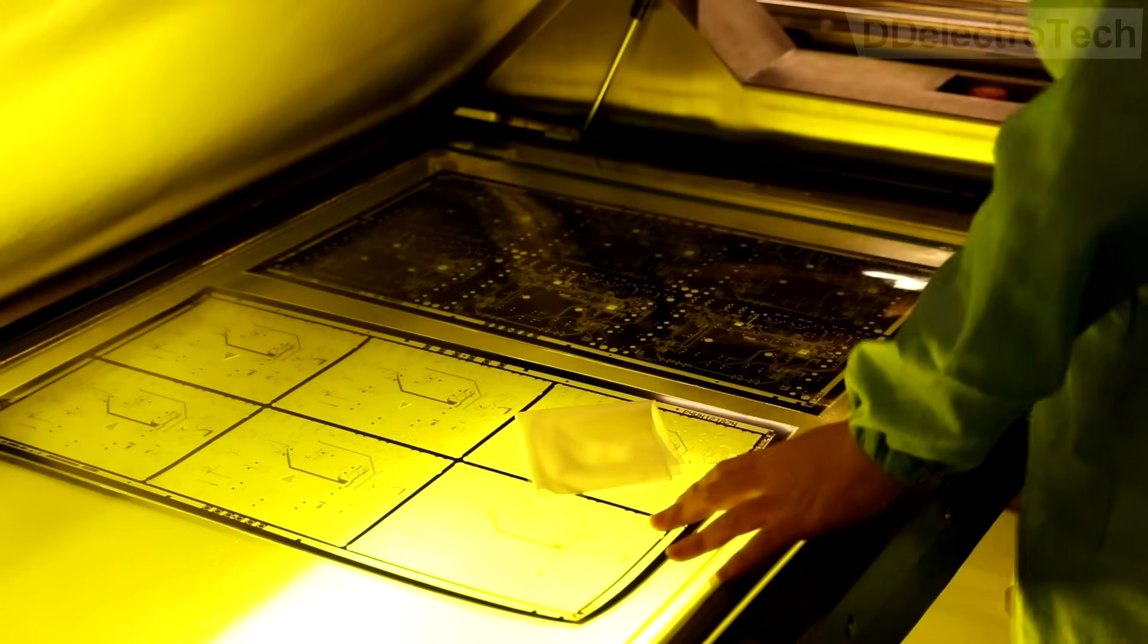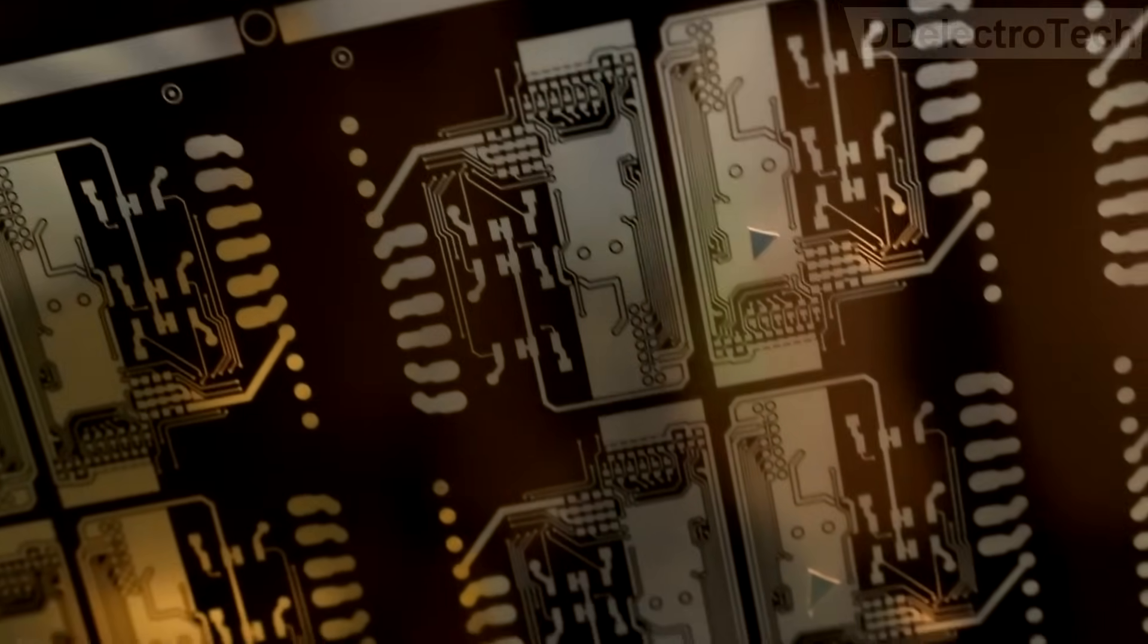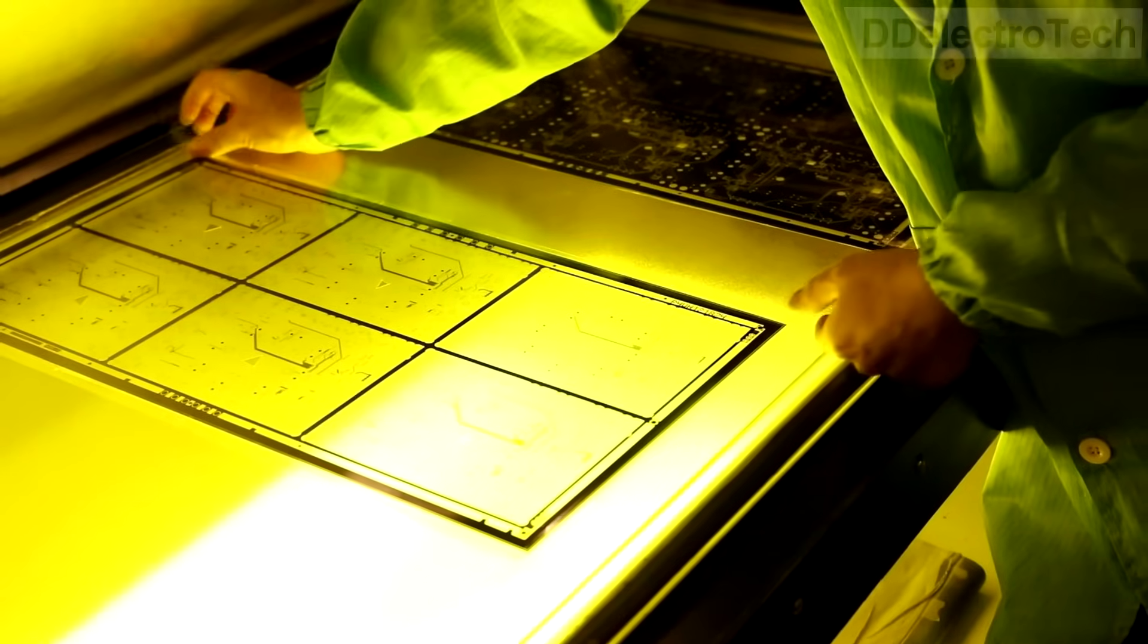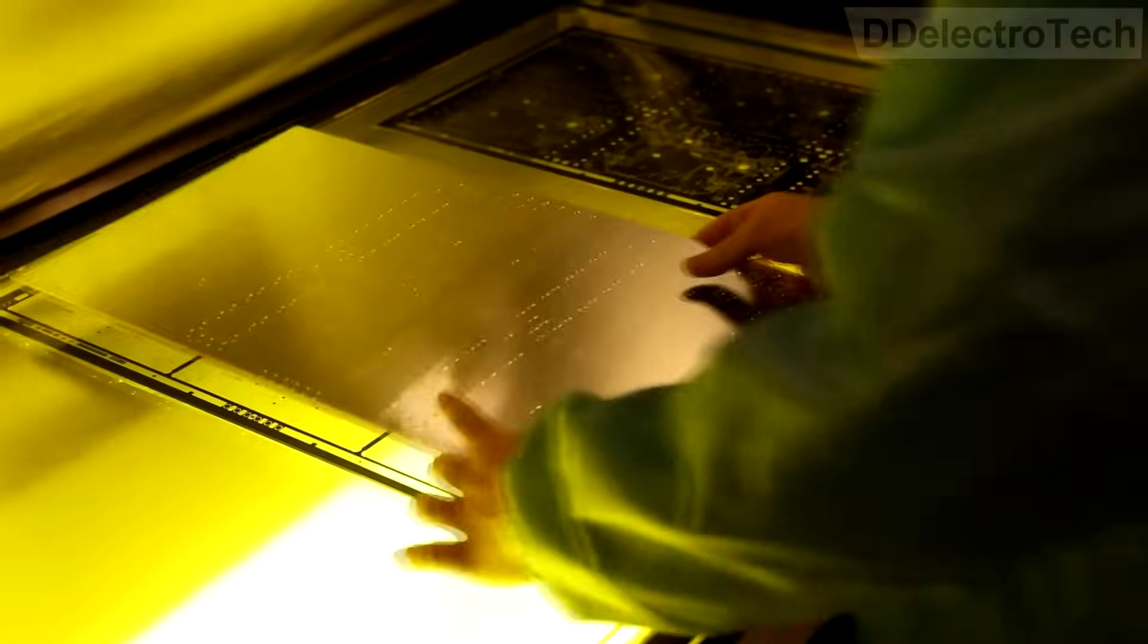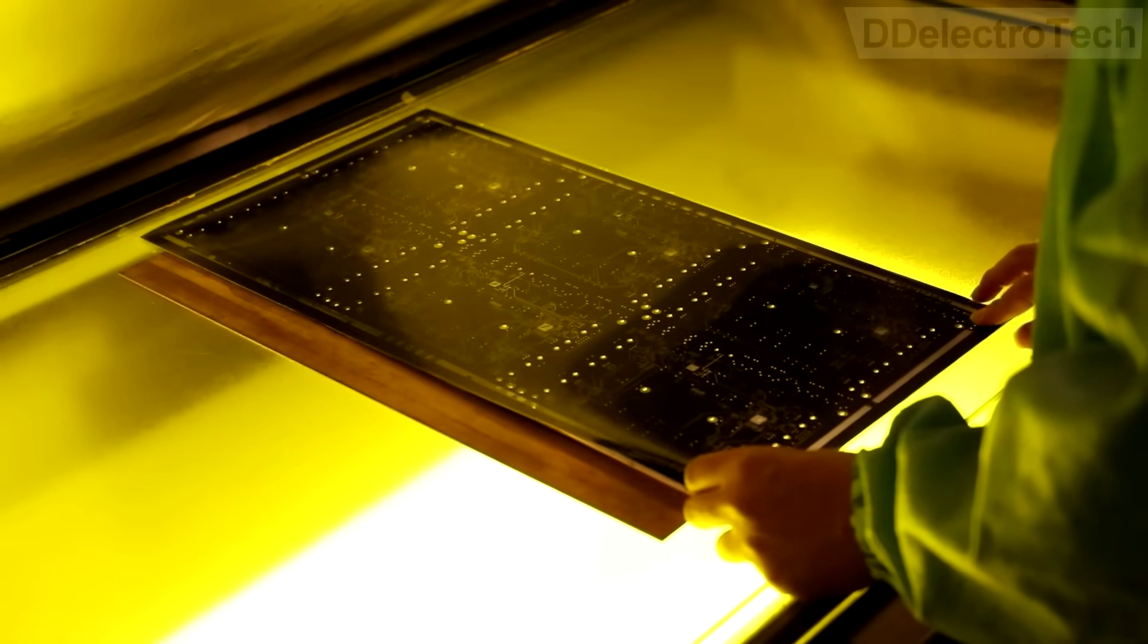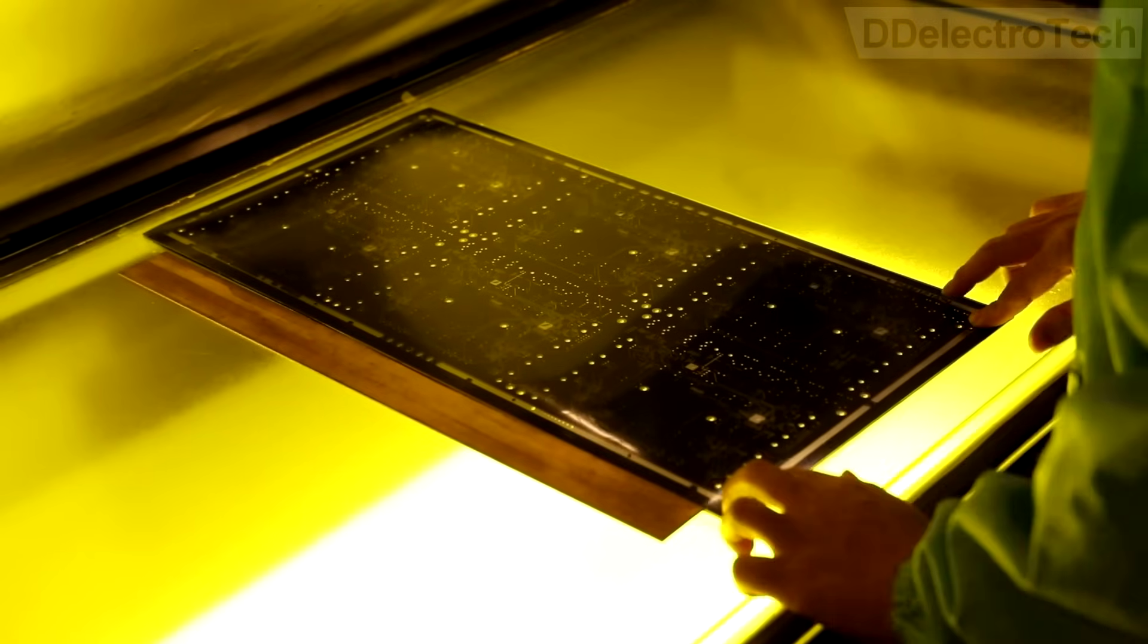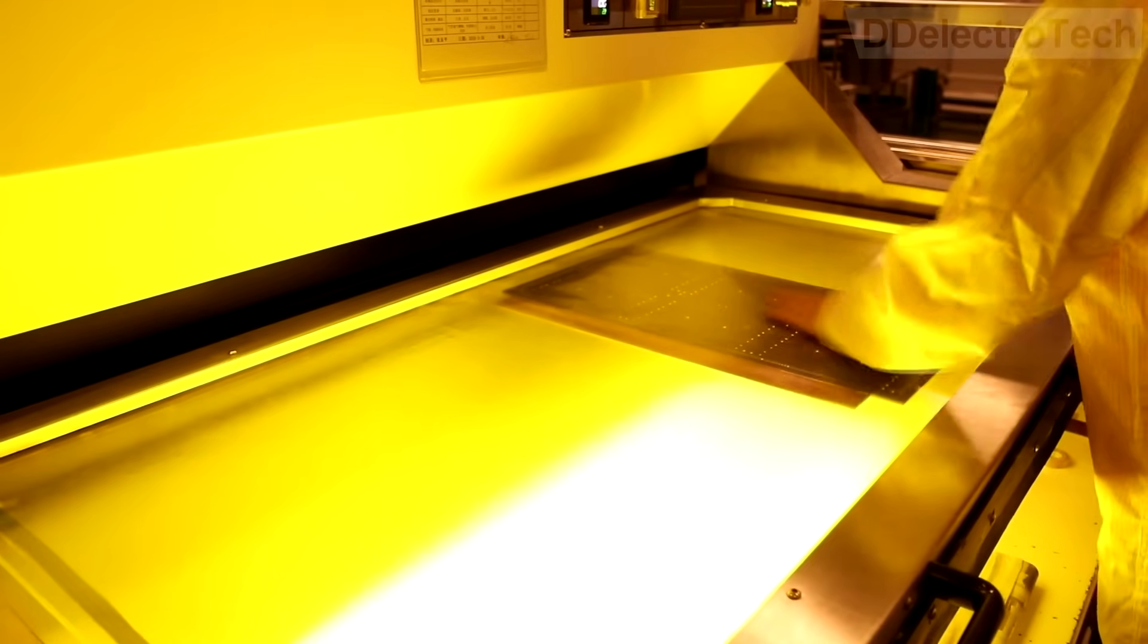Then the operator cleans the films - the film is the one which already has printed circuit diagrams on it - and loads the first film, then puts the laminated panel, and finally the second film. After perfectly aligning both layers...